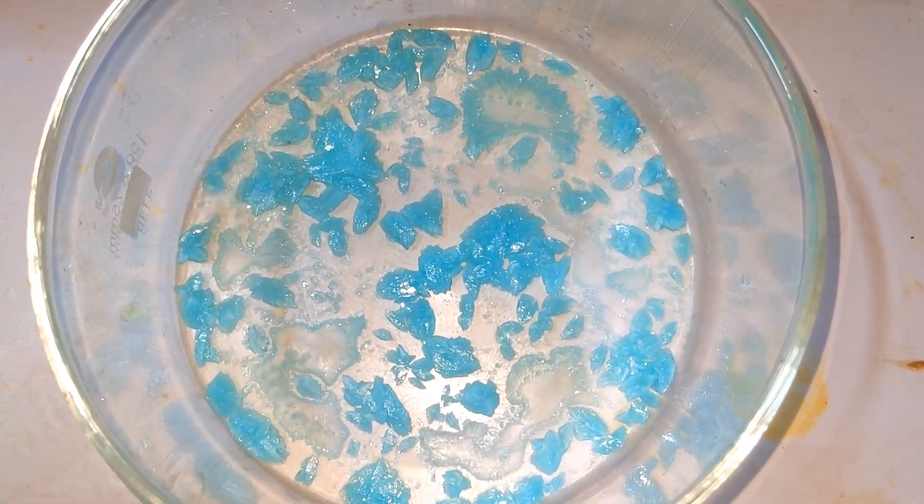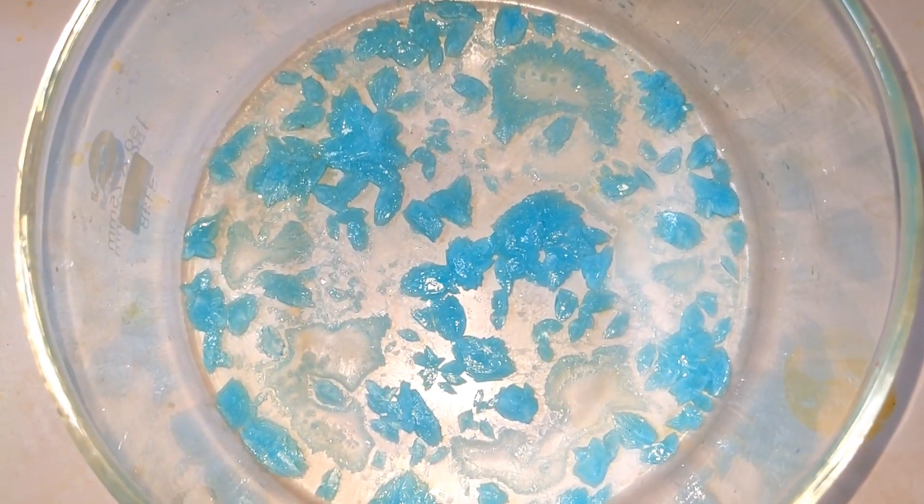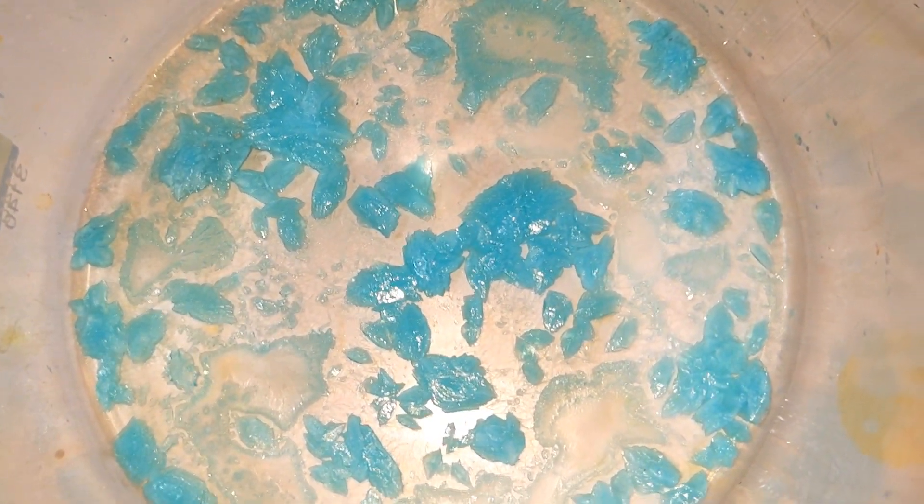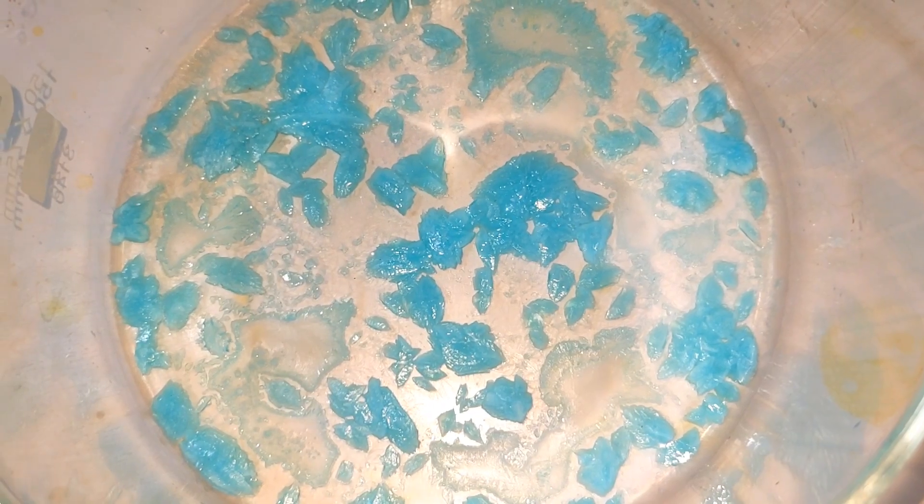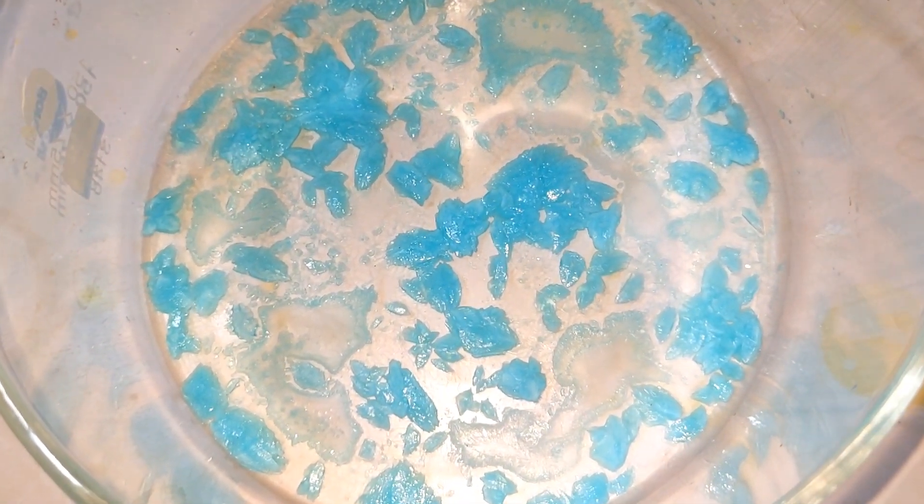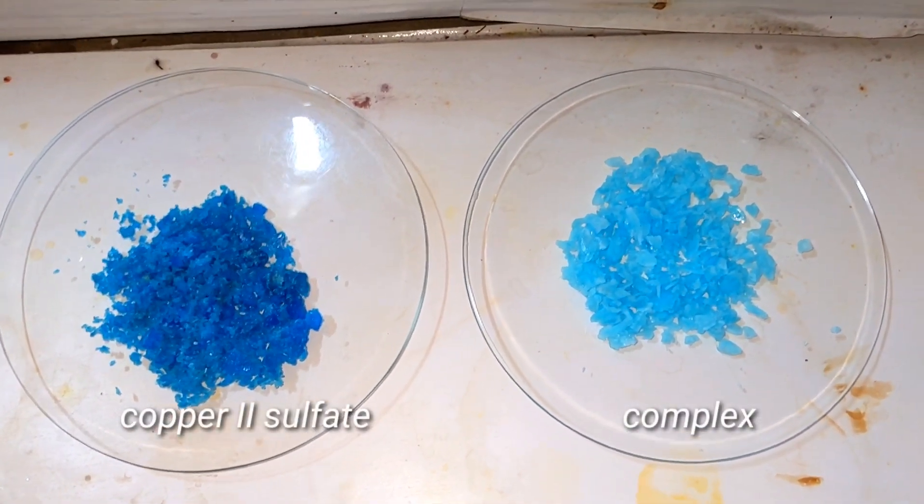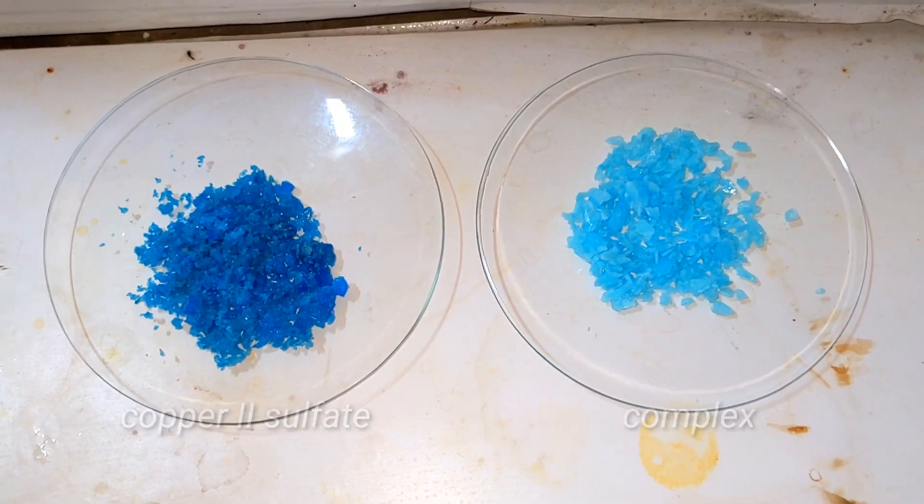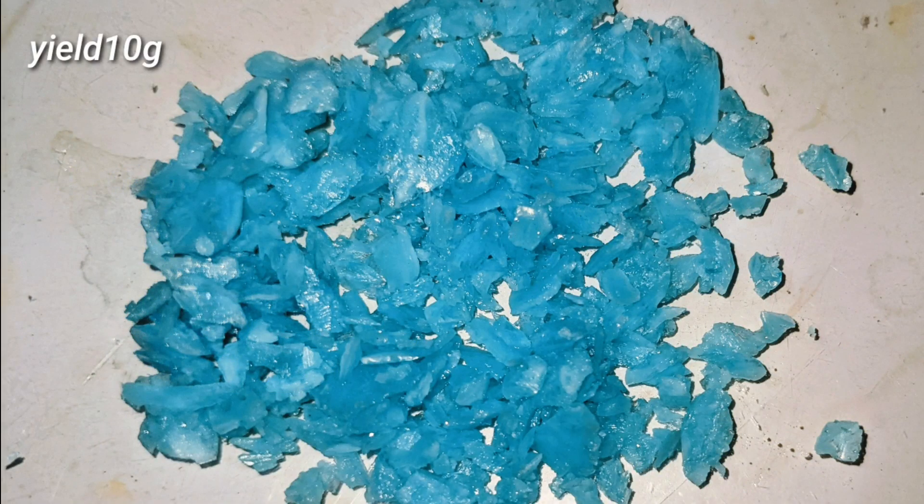When the water evaporated, beautiful cyan colored crystals of double salt ammonium copper 2 sulfate hexahydrate separate out. The crystals were scraped out of the crystallizing dish and were dried. This shows how the color of the double salt is pretty much different from the copper 2 sulfate. The final yield I obtained was 10 grams.